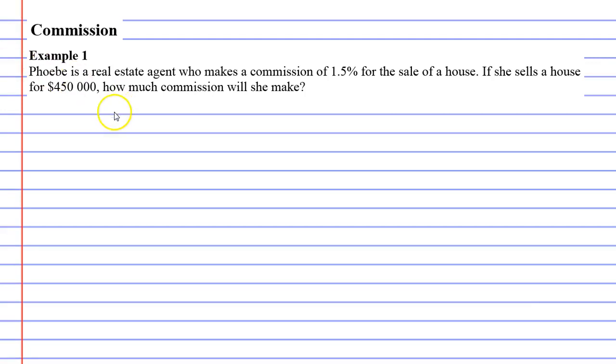you calculate the percentage of an amount. It's really simple. You take the percentage, you divide it by 100, and you times it by the amount, which in this case is $450,000. All right.